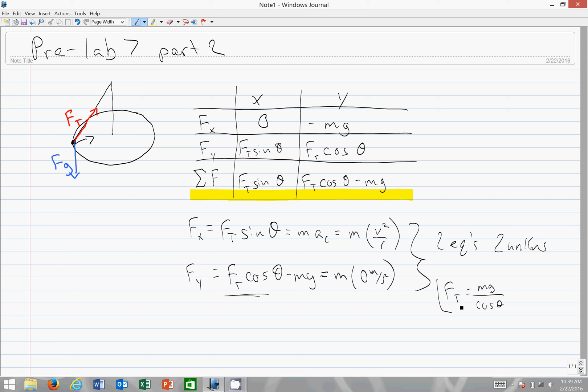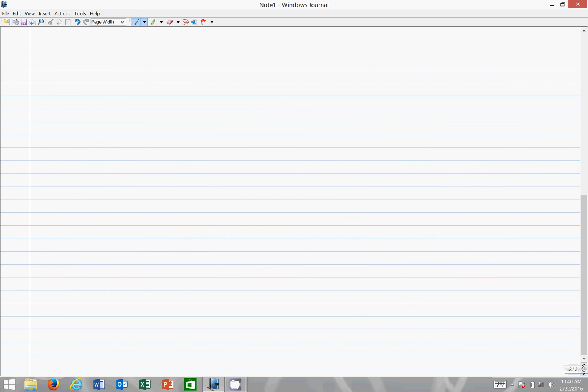Plug into the other equation, then we use this FT in this equation here, FT sine theta is equal to M V squared over R, use that FT, and with a little bit of algebra we find that G is equal to V squared over R tangent theta.